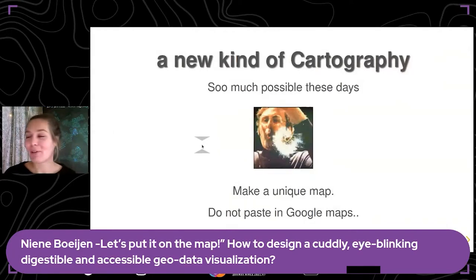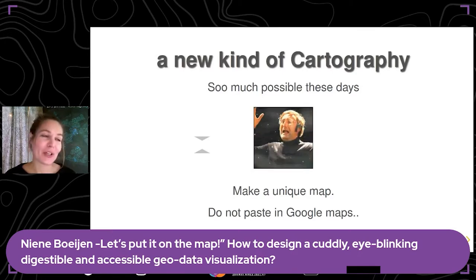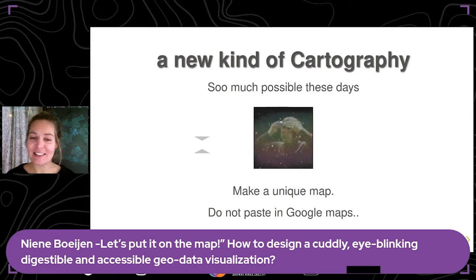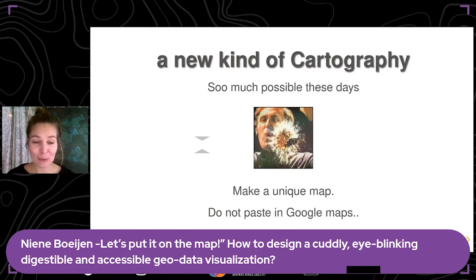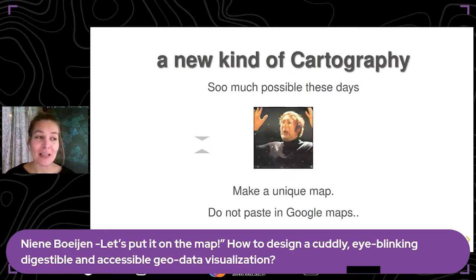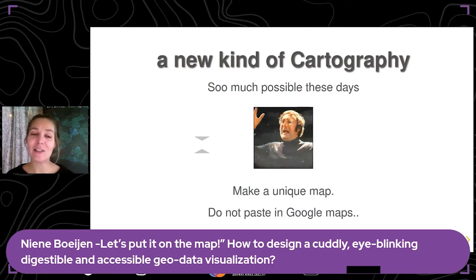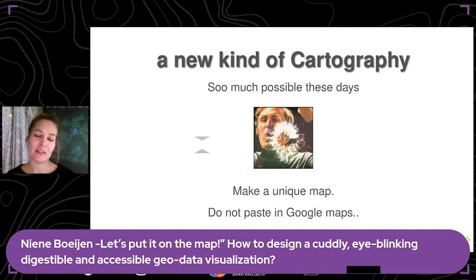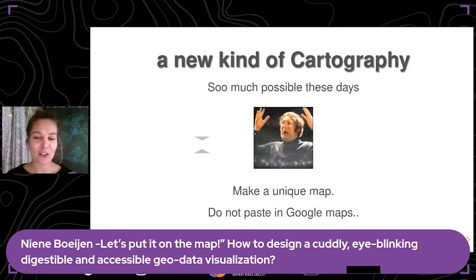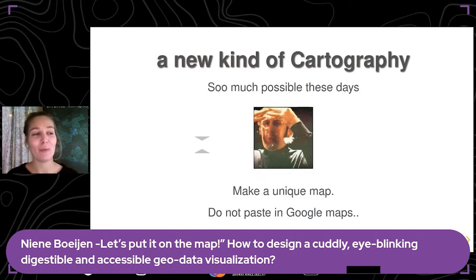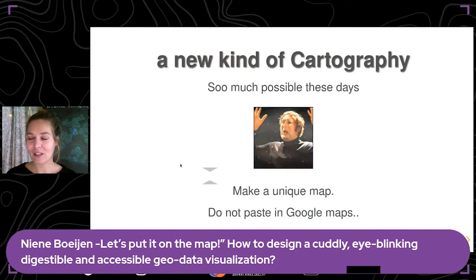We've heard already a lot at FOSS4G about vector tiles. With the coming of vector tiles, there's this whole new kind of cartography going on. It's so easy to style a map these days, so much is possible. We are able to make a unique map and customize it to our application and the company we're making it for. So why not do this? I once worked with a front-end designer who literally just pasted an image of Google Maps into the design — they forgot about the map entirely. Cartography is very important.